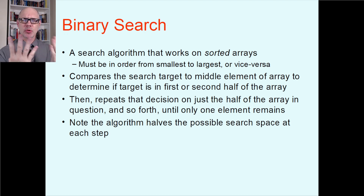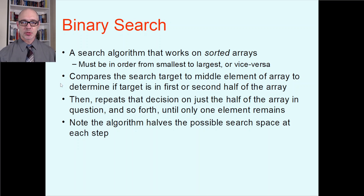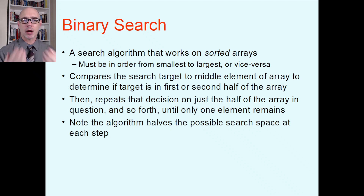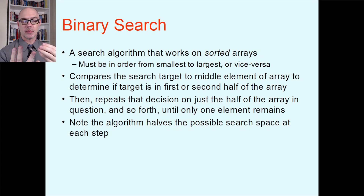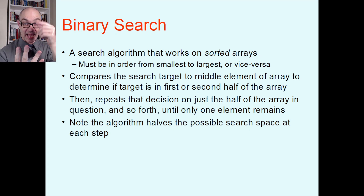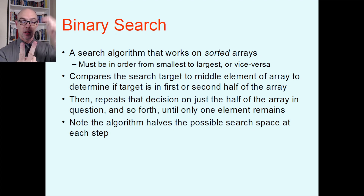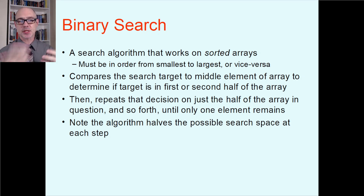To decide which half to search, you look at something in the middle. Whereas linear search starts at the beginning, binary search starts by looking at one of the things in the middle. Compare what you're searching for to that middle value. If what you're searching for is less than that middle value, it has to be in the front half. If it's greater, it has to be in the back half. Then you repeat that process on the remaining slice — find something in the middle, compare it — and keep splitting in half until you're down to one thing.